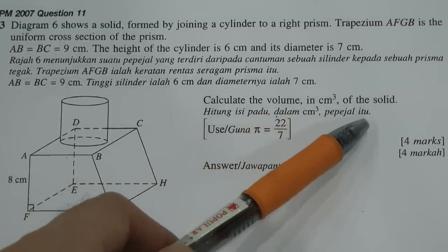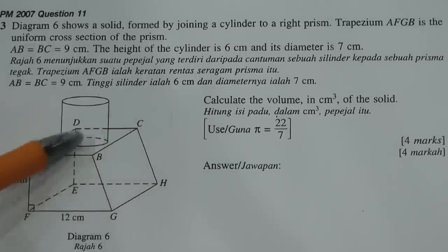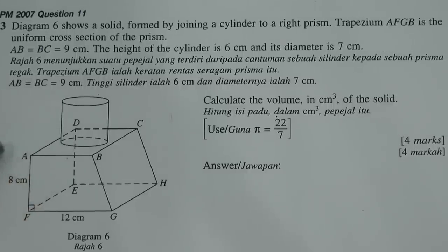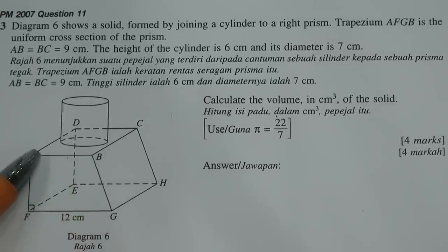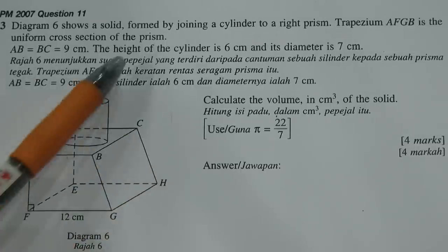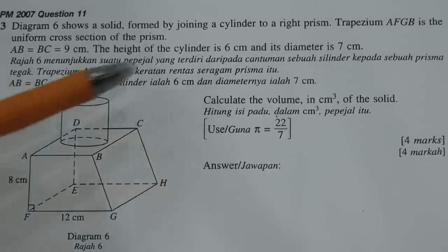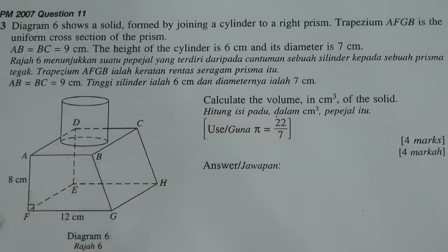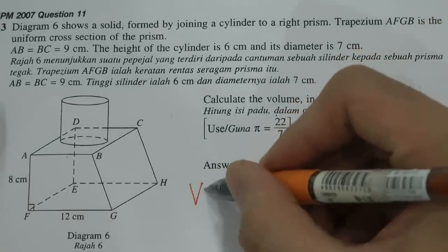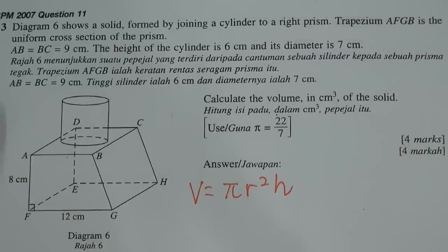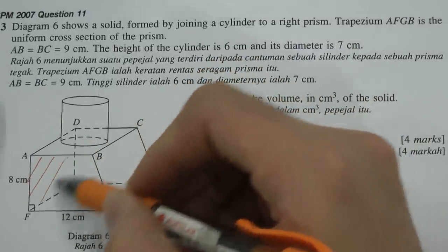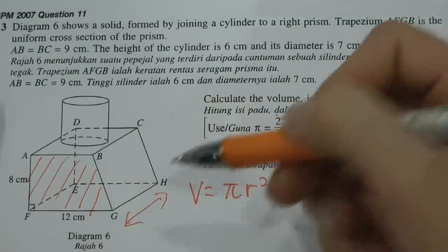Before we start to calculate the volume, some information is given. AB equals BC which is 9 centimeters. The height of the cylinder is 6, and the diameter is 7. The volume formula for a cylinder will be pi r squared h, and the volume for a prism will be the cross-sectional area multiplied by the height.